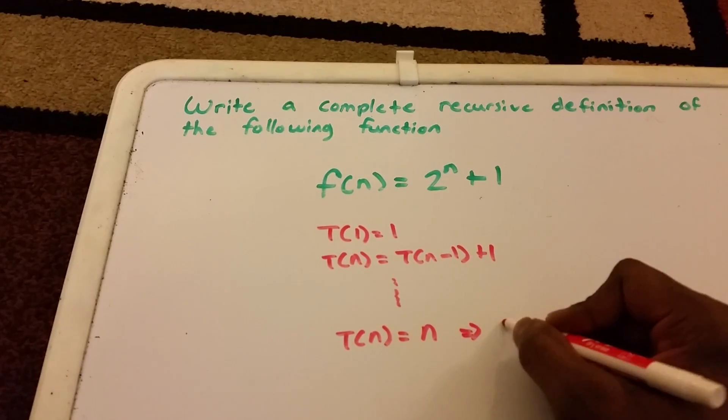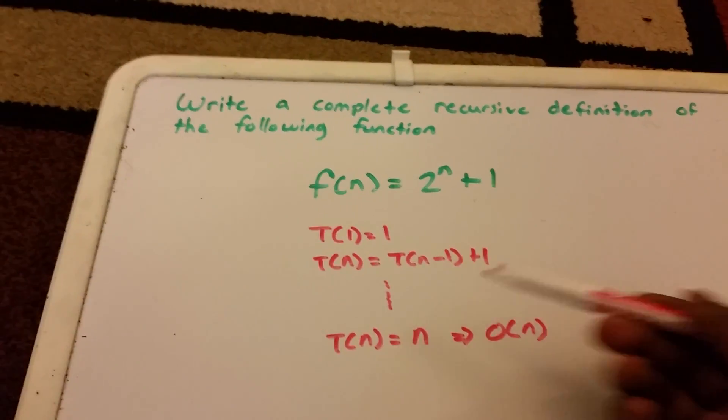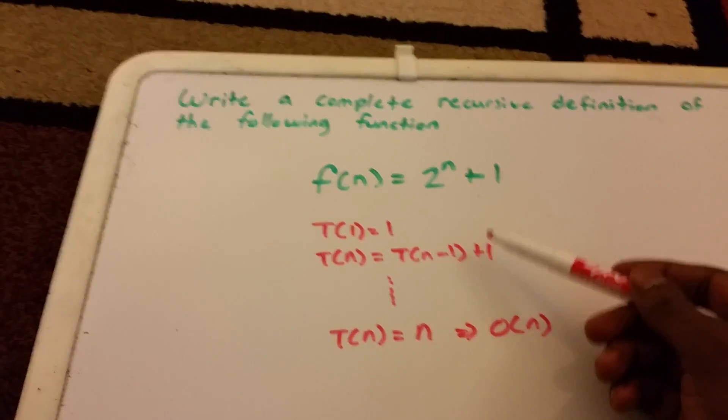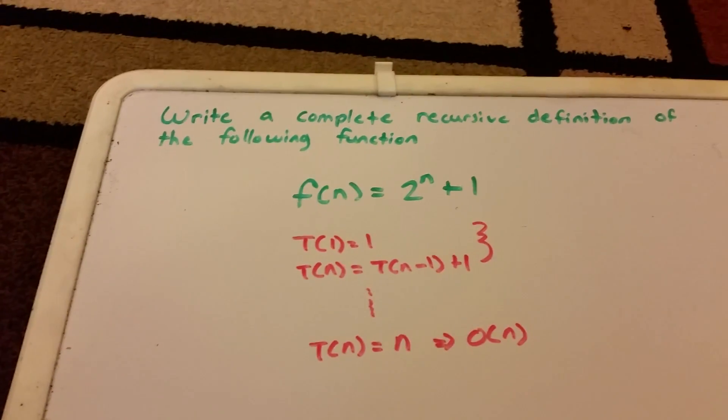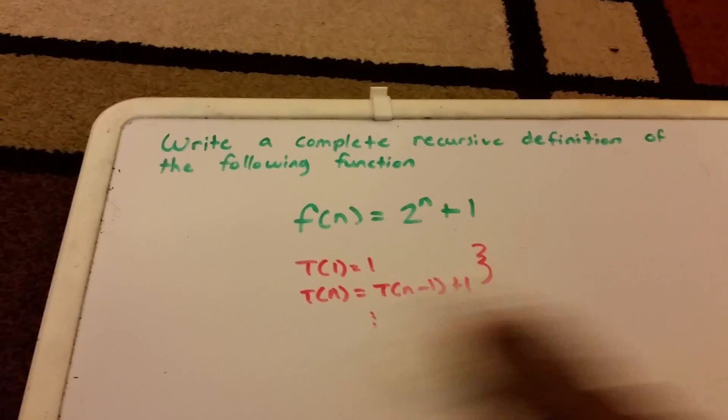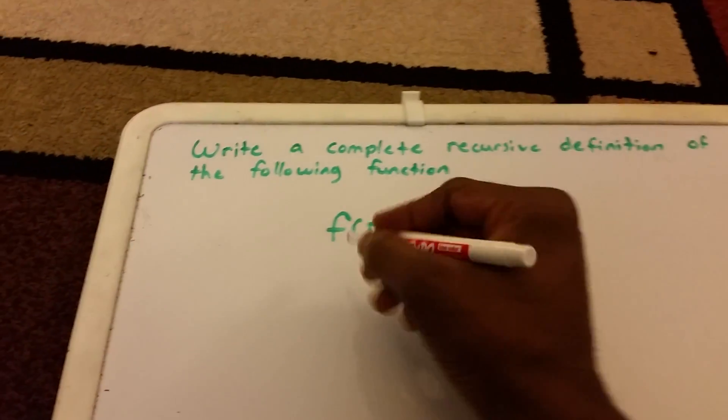Of course that would imply it's big O of n, but we're gonna do the opposite. We're gonna start with our function and get our recursive definition. So let's get started.